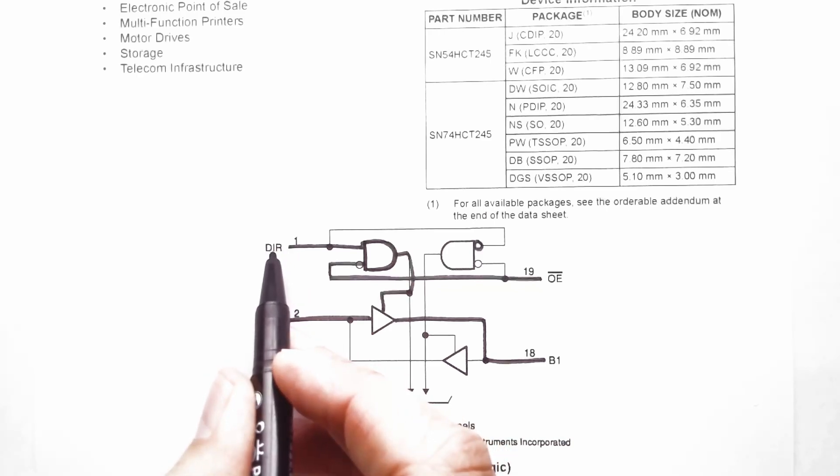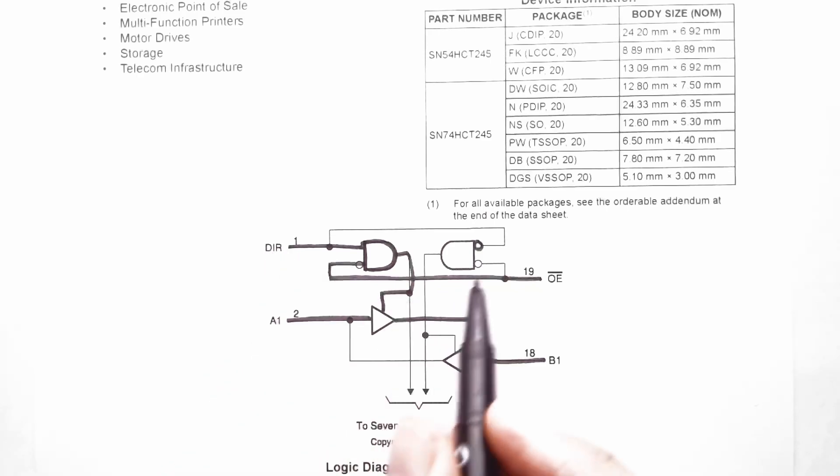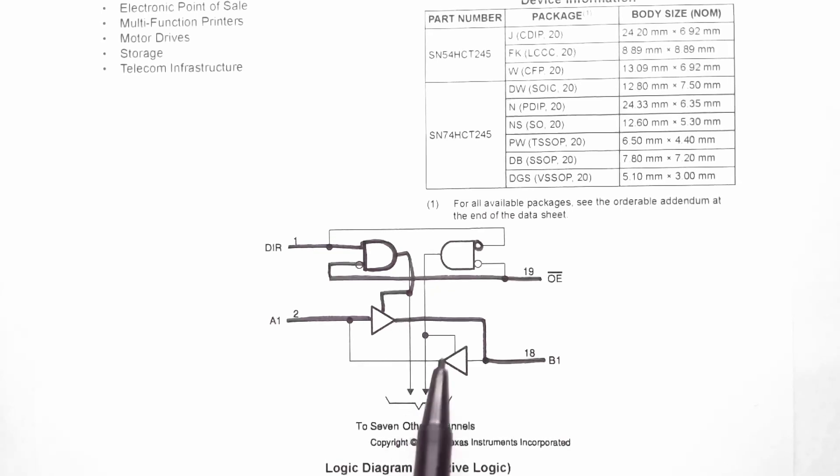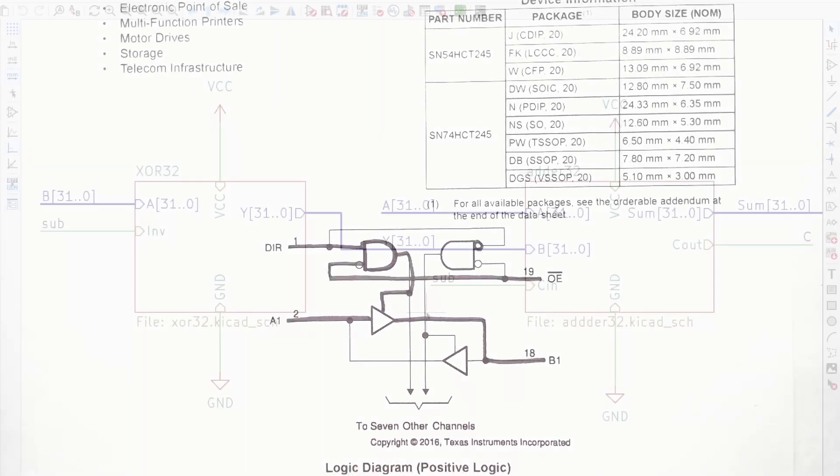So I will permanently set the direction input to high and I can turn the output from our ADD sub module on and off by setting the output enable appropriately. Now this is an 8-bit module, so this is just showing one of the transceivers here, a 1-bit transceiver. We have 7 more down here, so there are a total of 8 bits. So I will need 4 of these modules for the 32-bit output of our ADD sub module.